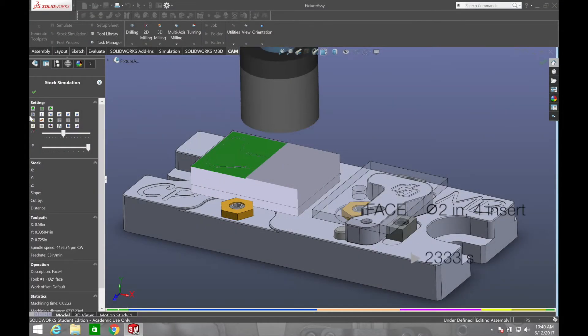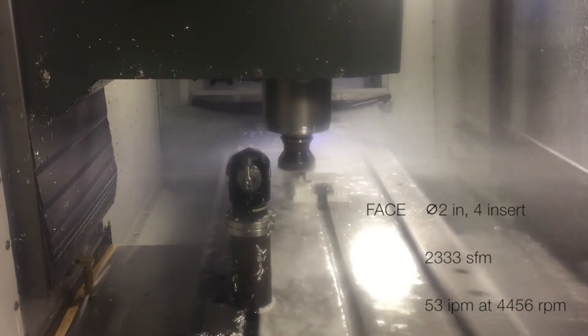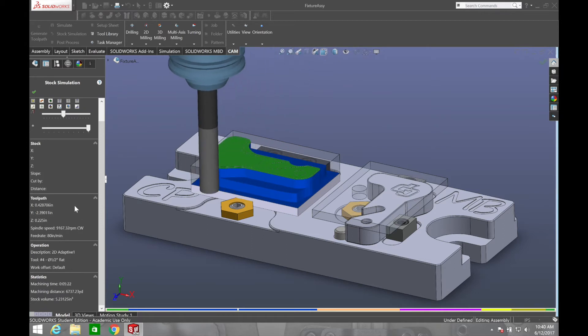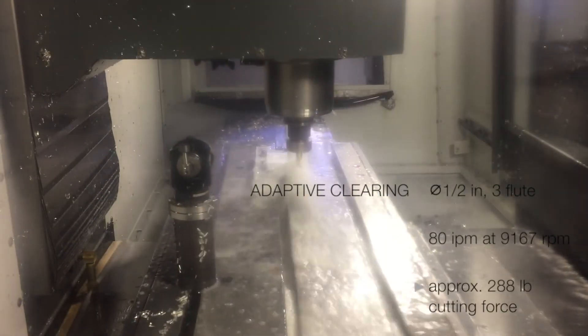A 2 inch diameter 4-insert face mill will be used to face Op1. A ½ inch 3-flute end mill will be used for the adaptive clearing step. This is an aggressive cut at 80 inches per minute, generating an approximate tangential cutting force of 288 pounds.